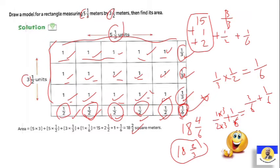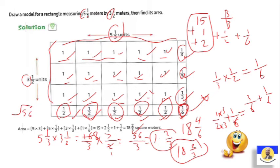Or another way, I can multiply: 5 and a third multiply by 3 and a half. As we agreed, first we change it to improper fraction. Five by three, 15 and 1, it will be sixteen over three. Three by two, 6 plus 1, it's 7 over 2. Sixteen divided by 2 equals 8. So it will be 8 by 7, fifty six over three. If we divide 56 over 3, it will give us the answer 18 and two over three.